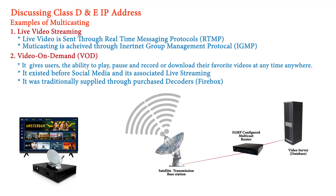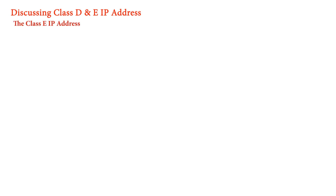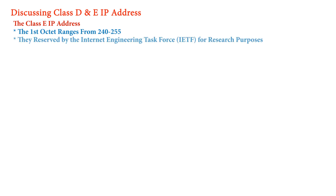The last IP address class is class E. The first octet of class E IP addresses ranges from 240 to 255. These addresses are not used; they are reserved by the Internet Engineering Task Force (IETF) for research purposes, so we will not discuss them further.